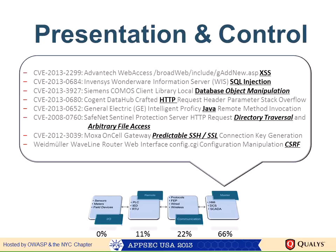Looking at SCADA master vulnerabilities in 2013: 5% were cross-site scripting, SQL injection and database-related vulnerabilities also appeared, and 31% were generic web application vulnerabilities including directory traversal, cross-site request forgery, vulnerabilities in ActiveX controls, and some in cryptography. Vendors like Invensys and Siemens had database object manipulation, cross-site scripting, and SQL injection issues. SCADA developers now need to be trained to write secure application security code.